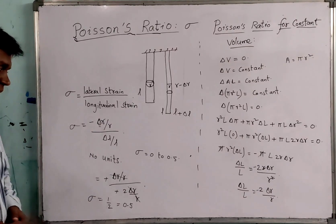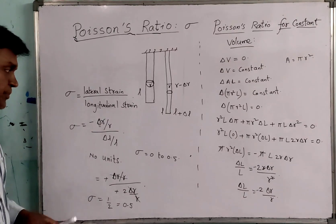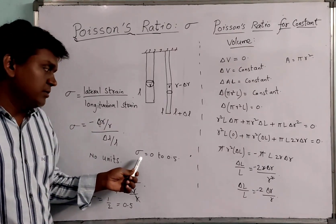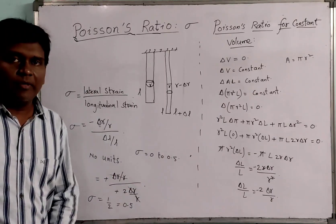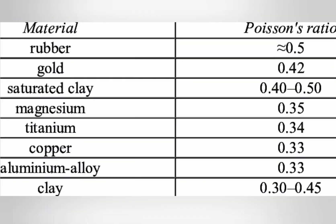That means Poisson's ratio for constant volume is sigma equals 0.5, or 1 by 2. This sigma value can range from 0 to 0.5. Here are some materials with their Poisson's ratio values: rubber, gold, saturated clay, magnesium, titanium, copper, aluminium alloy, and clay.